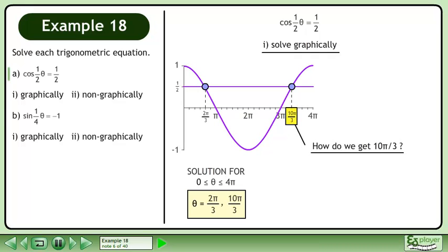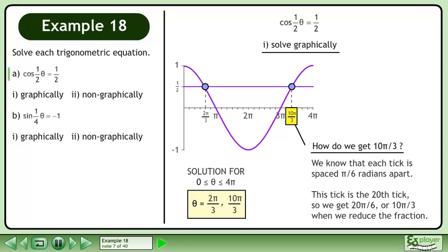How do we get 10pi over 3? We know that each tick is spaced pi over 6 radians apart. This tick is the 20th tick, so we get 20pi over 6 or 10pi over 3 when we reduce the fraction.